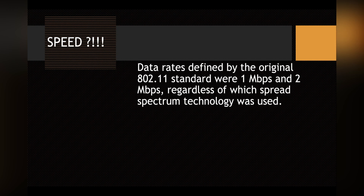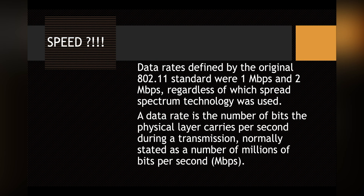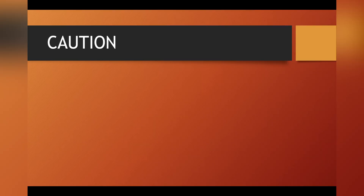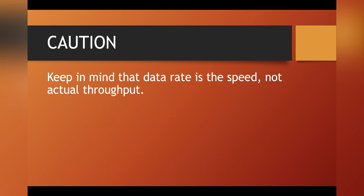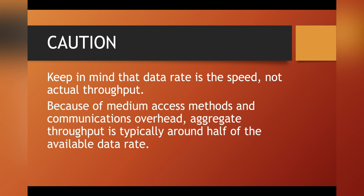Now there's a question: which is faster? Data rates defined by the original 802.11 standard were 1 Mbps and 2 Mbps regardless of which spread spectrum technology was used, so it doesn't matter which one we use. Data rate is the number of bits the physical layer carries per second, but it's not the actual throughput. Throughput — the amount of data that can pass through the channel — depends on Shannon channel theory, and typically it's around half of the available data rate.